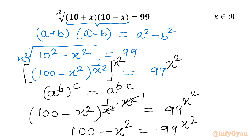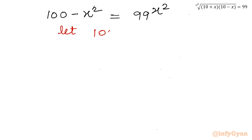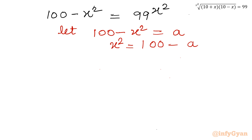So ultimately 100 minus x squared equals 99 to the power x squared. Let's solve this equation. I will use substitution. Let us consider 100 minus x squared equal to a. From this equation I can write x squared equals 100 minus a. Let us put the value in: LHS becomes a, and right hand side becomes 99 to the power (100 minus a).